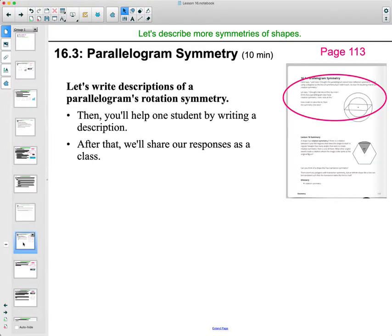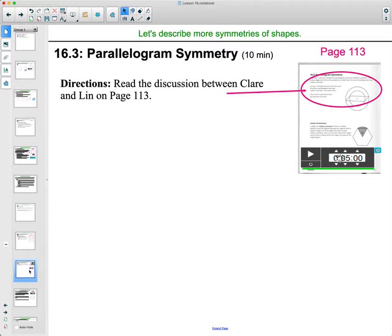So then we're going to move to 16.3, which is on page 113 in your student workbook. And we're going to look at writing descriptions. So you're going to look at a student description and then you're going to create your own or help with that. So the student conversation is on page 113. So it's a discussion between Claire and Lynn. So go ahead and read that on page 113.